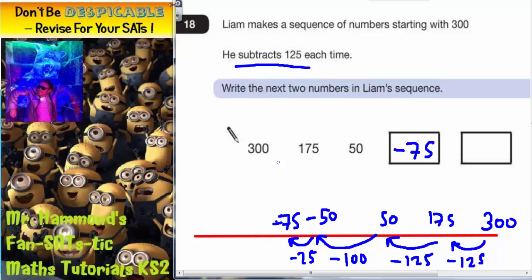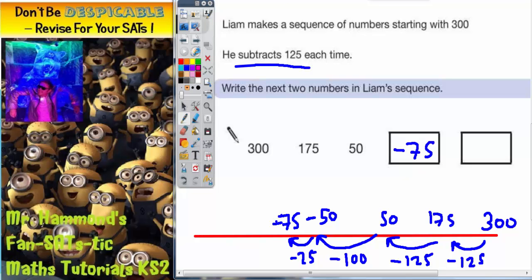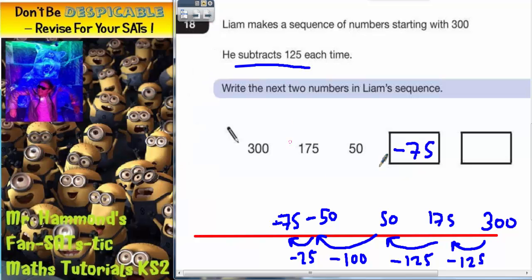For the second mystery number in the sequence, we need to take away another 125, but this time from negative 75. So we need to take it in two steps again. Now, the easiest thing to do here is probably to take away the 25 first because you may have noticed that 25 and 75 makes 100.